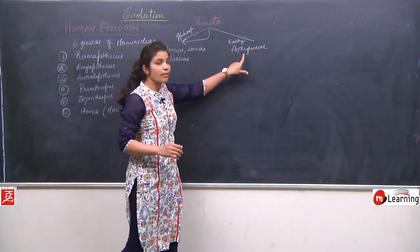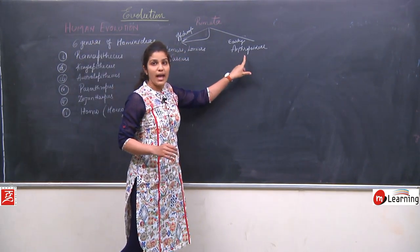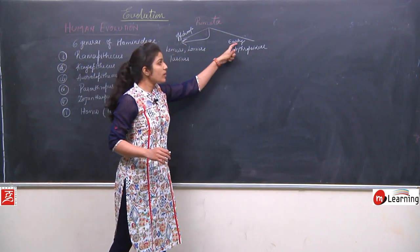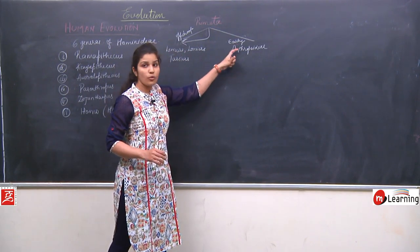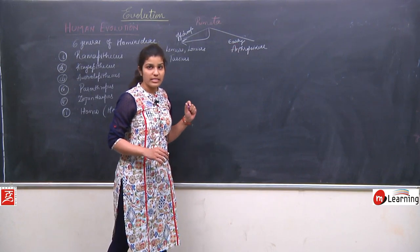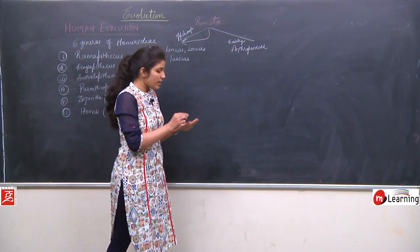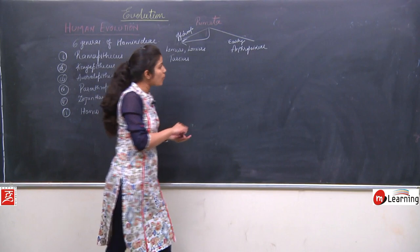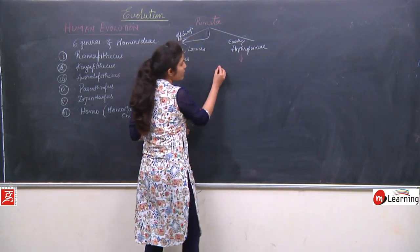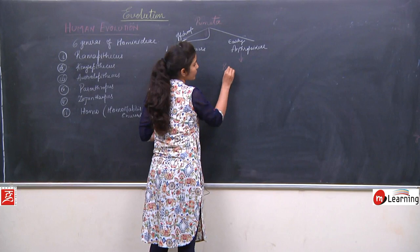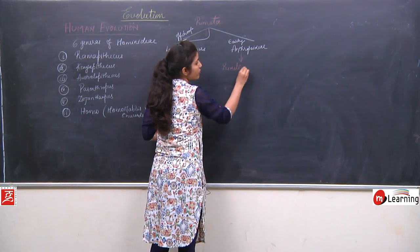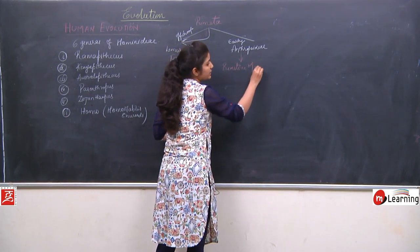The only remaining sub-order was Anthropoidae. From Anthropoidae, the early Anthropoids developed, and from these early Anthropoids, the primitive monkeys were developed.